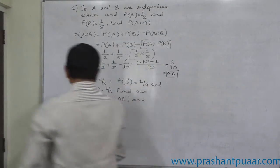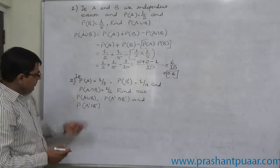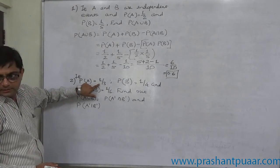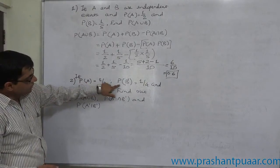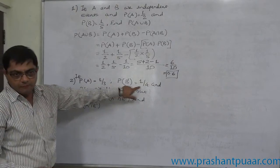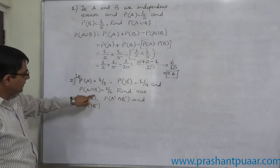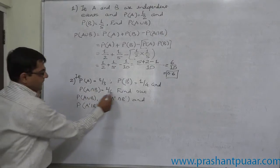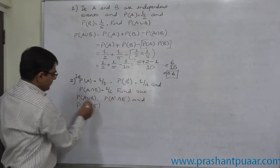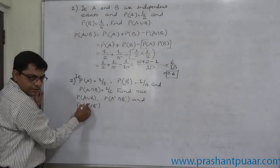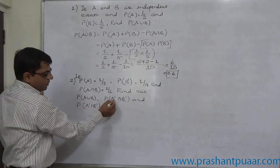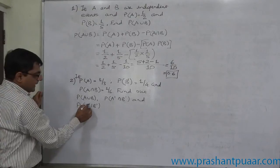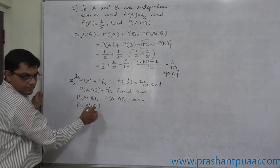Now the next case: P(A) = 1/3, P(B') = 1/4, and P(A∩B) = 1/6. Find P(A∪B), P(A'∩B'), and P(A'|B').